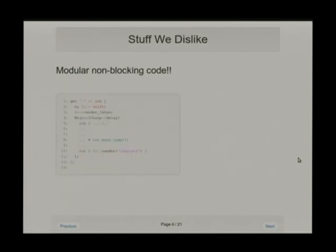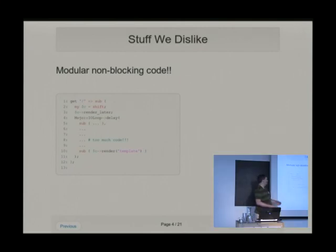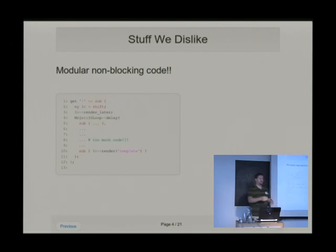But then the things we dislike are modular non-blocking code. I've done it myself and I've seen it in many other codebases: we were so nicely compact in our controller methods when blocking, but all of a sudden we put all of our business logic in the controller action. Why? It's so hard to abstract out things when it's non-blocking. So we end up with big IOLoop delays, and finally we render.